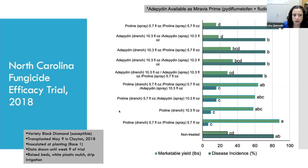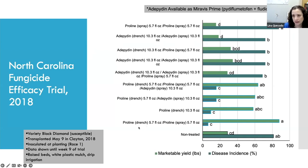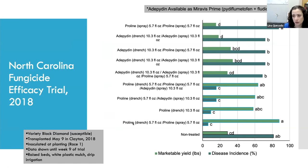I'm going to show you results from a trial we did in 2018 with Proline, which is probably the most effective product for this disease, and one that back then was called Adepidyn but is now available as Miravis Prime. We evaluated several combinations of Proline and Adepidyn as soil drench applications and foliar sprays. Proline has one ground application and two foliar applications labeled; Adepidyn has ground and foliar applications with no limit. The non-treated control shows plenty of disease pressure, and what you can see quickly is that all treatments with Proline applied as a ground application at or shortly after planting had the best outcomes.